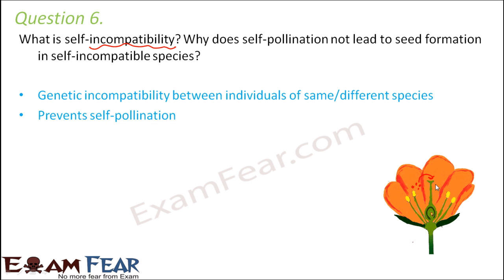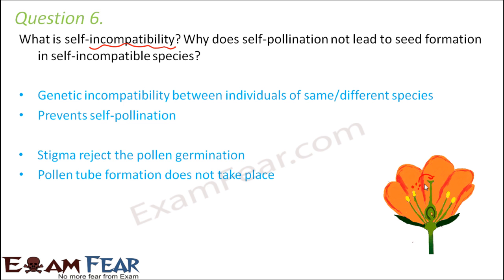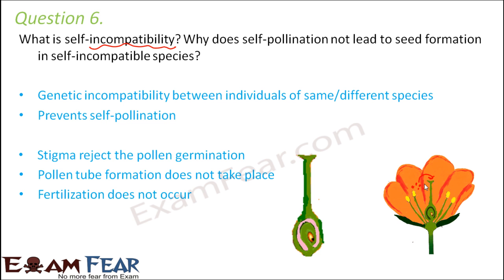then self pollination will not be able to take place because the pistil will not accept the pollen. If the pistil doesn't accept the pollen, the pollen tube will not be formed and pollination will not take place. So this will prevent self pollination. The stigma will reject pollen germination, so pollen tube formation will not take place. As a result, fertilization does not occur — all these steps follow because of pollen-pistil incompatibility.